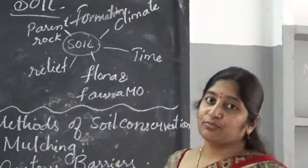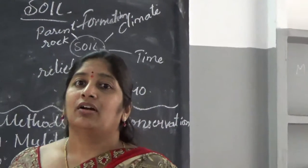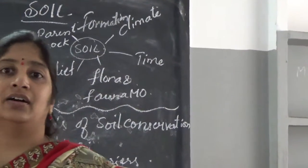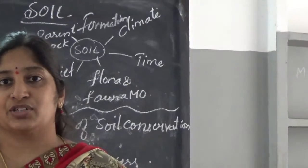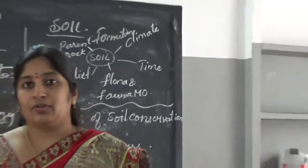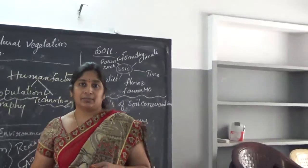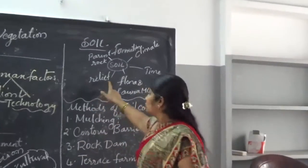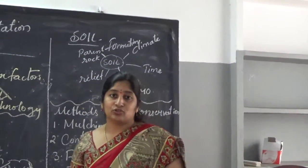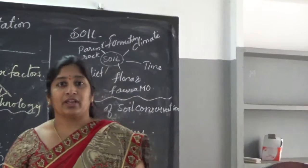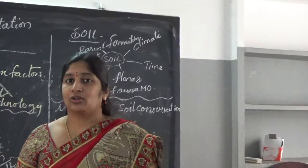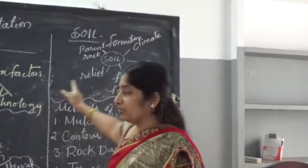Next is relief — meaning the land is not the same everywhere; it is uneven and distributed differently across the earth. It depends on mountains, flat plains, and the type of soil. The weathering process and everything depends on the relief features. These are the various factors for the formation of soil.